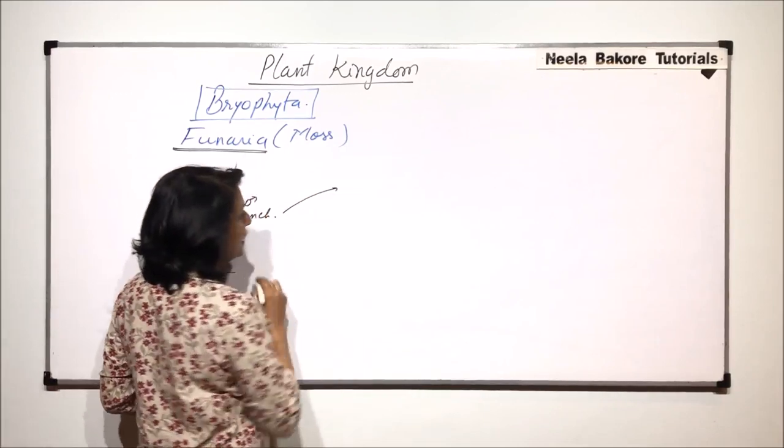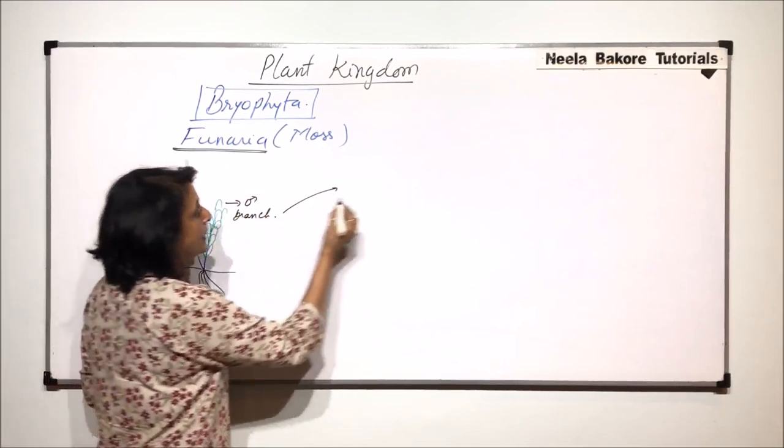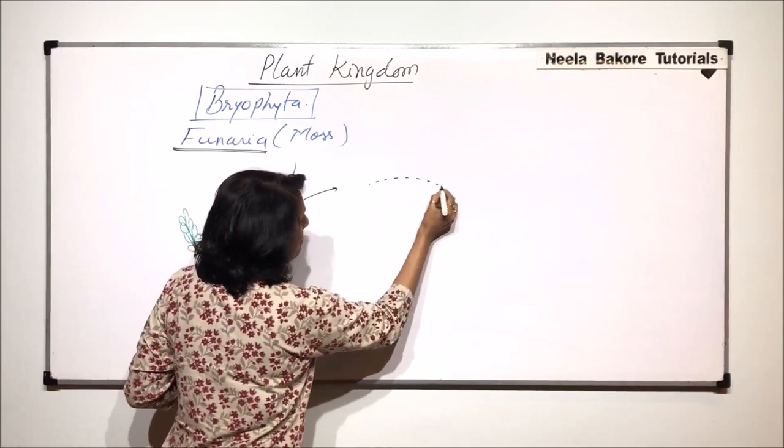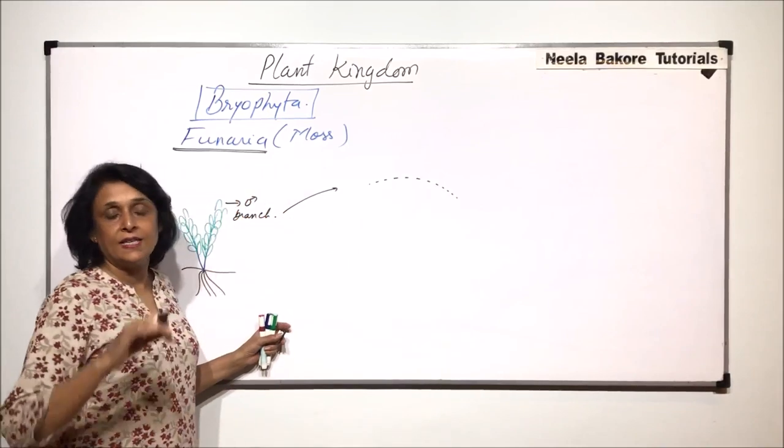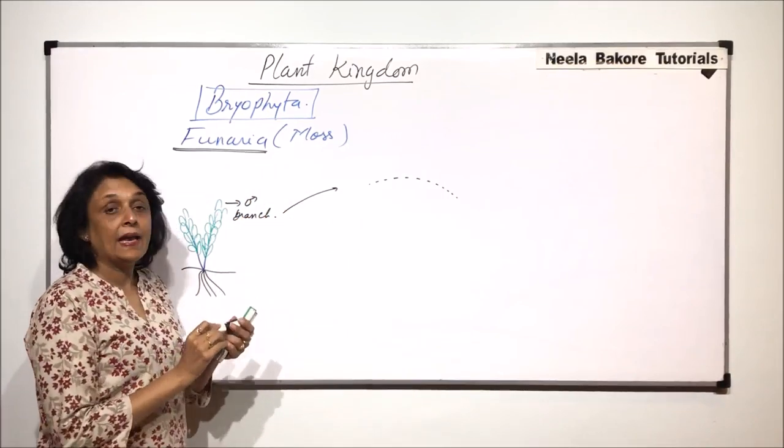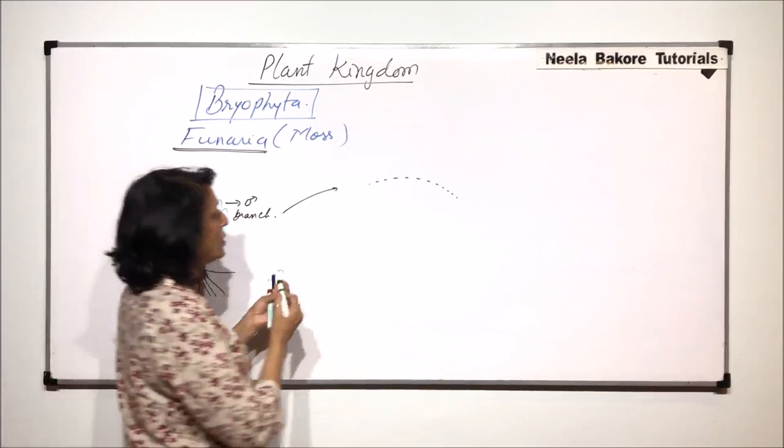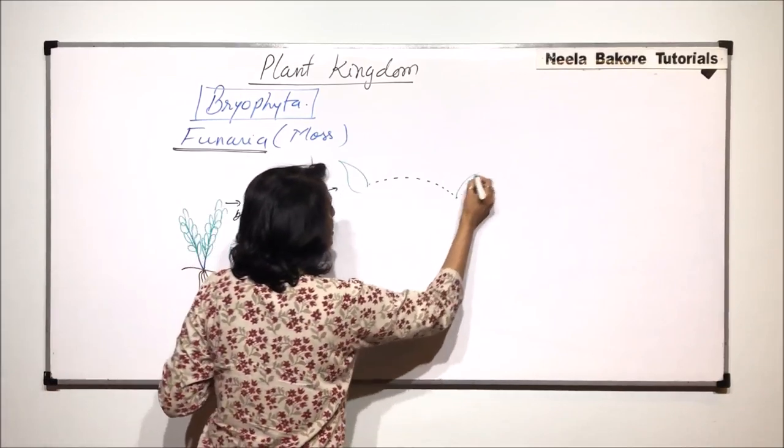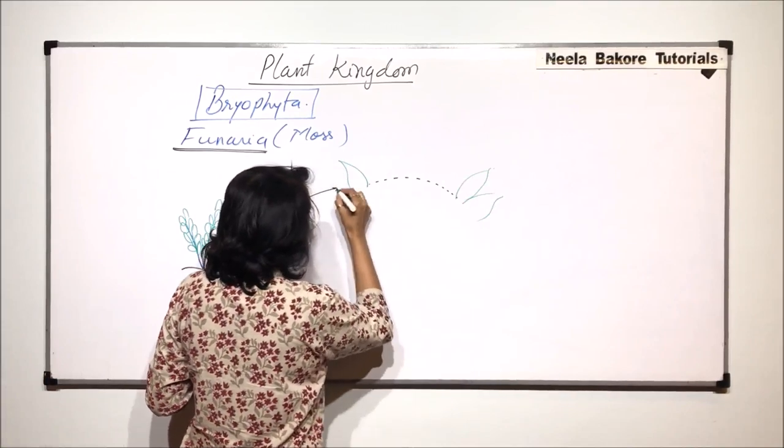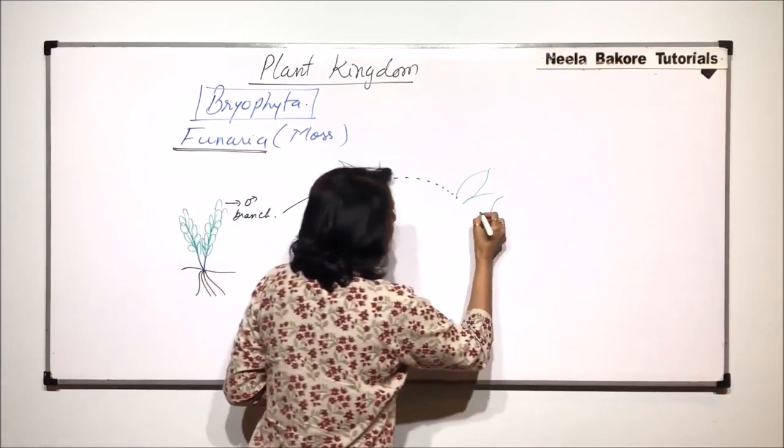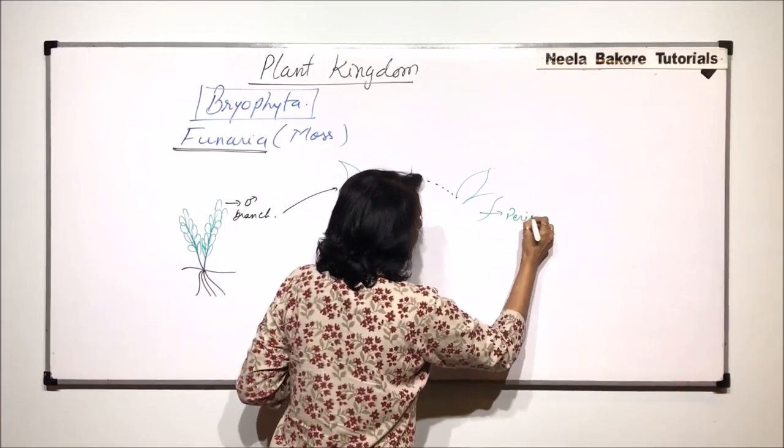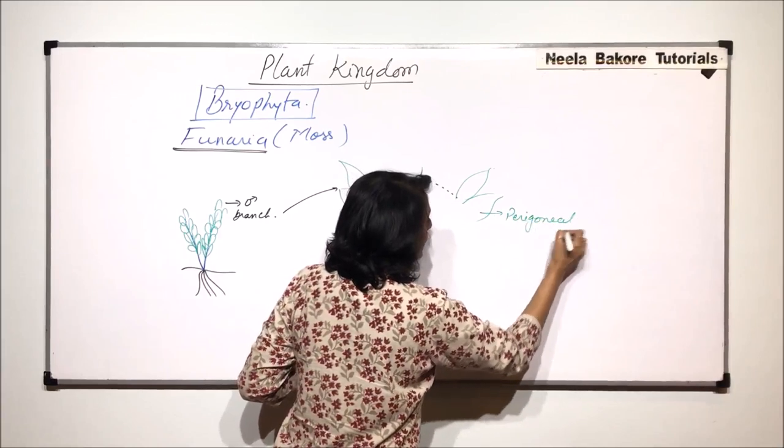If we enlarge this, we find that the tip is convex. It is a bulging structure and all around it is supported or surrounded by large leaf-like structures. These leaves are known as perigoneal leaves.